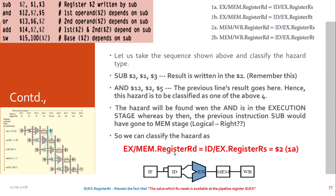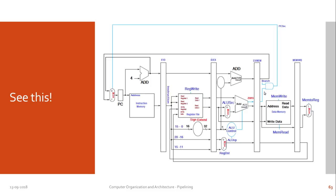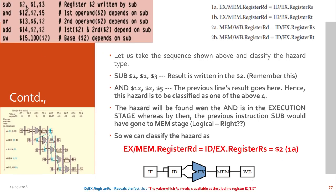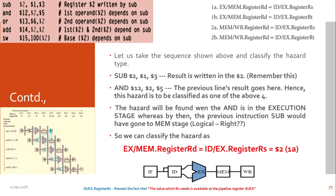EX/MEM is the pipeline register that holds the result, and it should be updated to RD and then fed into the RS of the second instruction through ID/EX. So this hazard belongs to class 1a. This classification is very important — you may get exam questions asking you to classify hazards in a given instruction sequence. You need to identify which hazard condition applies and understand why each format arises, otherwise it will not be easy to handle in an exam.